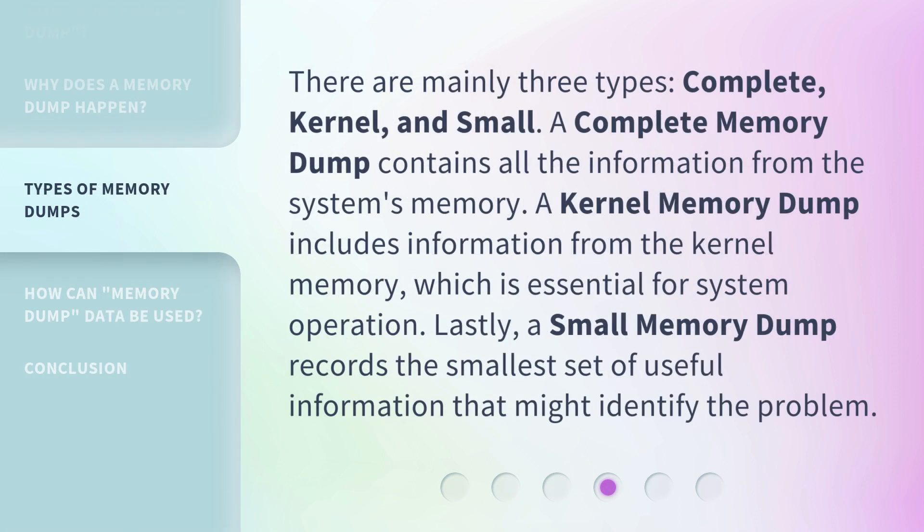There are mainly three types: complete, kernel, and small. A complete memory dump contains all the information from the system's memory. A kernel memory dump includes information from the kernel memory, which is essential for system operation. Lastly, a small memory dump records the smallest set of useful information that might identify the problem.